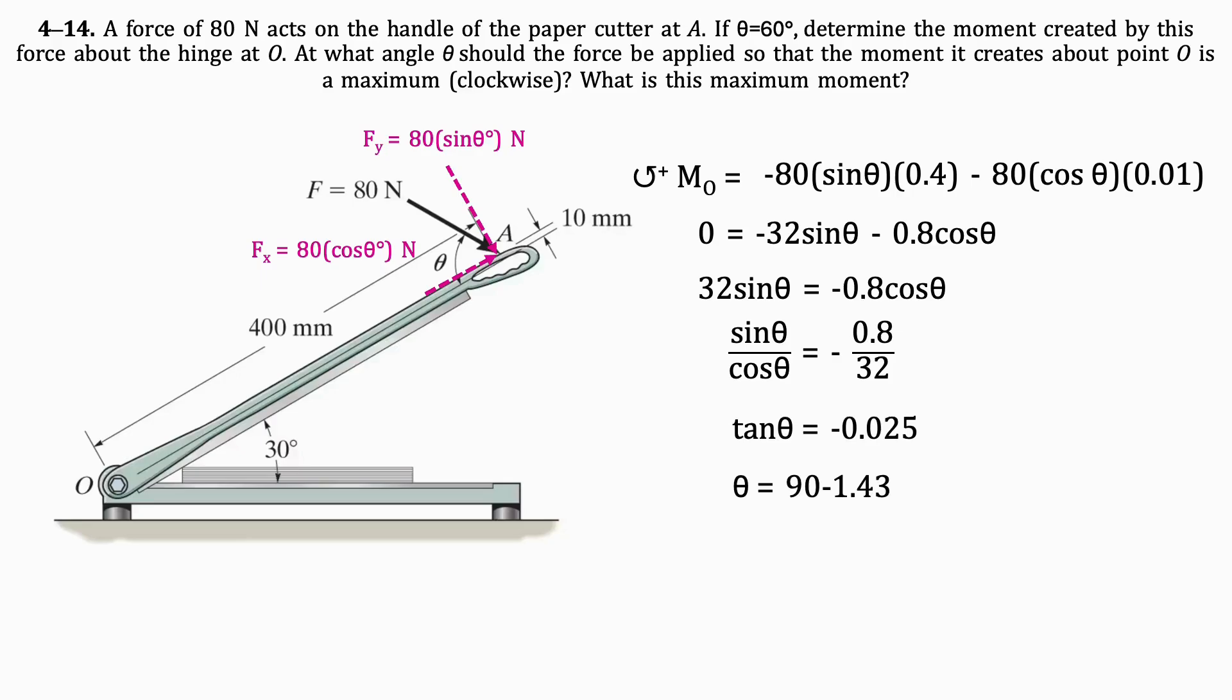Because this angle is negative, we'll subtract it from 90 degrees to get the true angle, which results in 88.6 degrees.